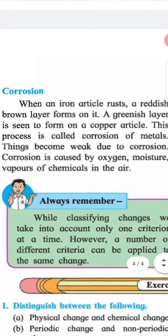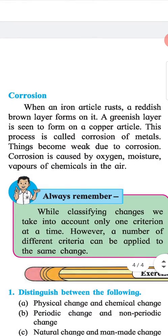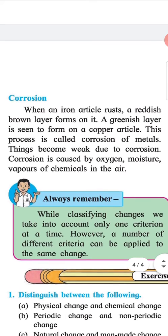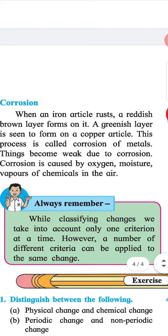Corrosion: When an iron article rusts, a reddish brown layer forms on it. A greenish layer is seen to have formed on a copper article. This process is called corrosion of metals. Things become weak due to corrosion. Corrosion is caused by oxygen, moisture, vapors of chemicals in the air.